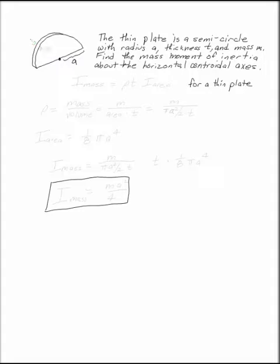The thin plate is a semicircle with radius a, thickness t, and mass m. Find the mass moment of inertia about the horizontal centroidal axis.